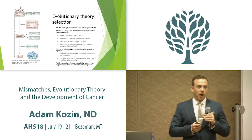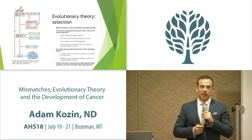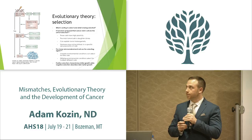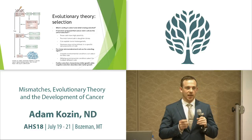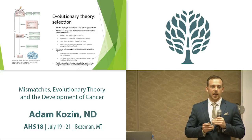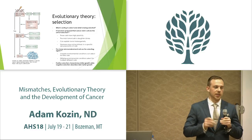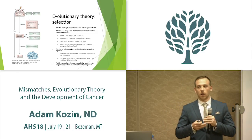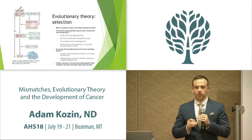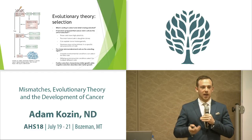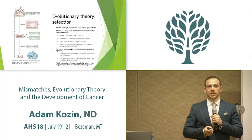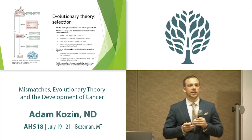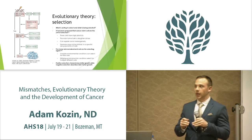This begs the question: what is the unit of selection? It's been found that cancer stem cells are the unit of selection. Cancer stem cells are just like normal stem cells — they can give rise to more cells. But with cancer stem cells, they have unlimited replicative potential and decreased ability to de-differentiate, meaning they can really only become more tumor cells.